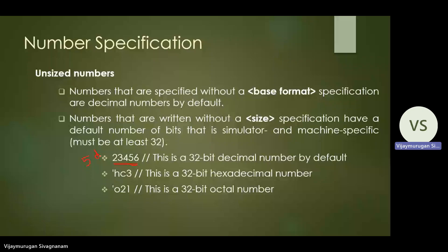Another example: 'hc3' represents a hexadecimal value — this is a 32-bit hexadecimal number by default. Similarly, 'o21' represents an octal value, where 'o' denotes the octal number system and 21 is the value.